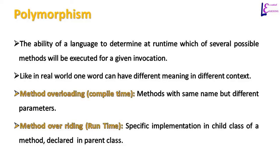In method overriding, a method declared in the parent class is given a specific implementation in the child class. For example, a speak method in an Animal class will have a different implementation in a child class because different animals make different sounds.